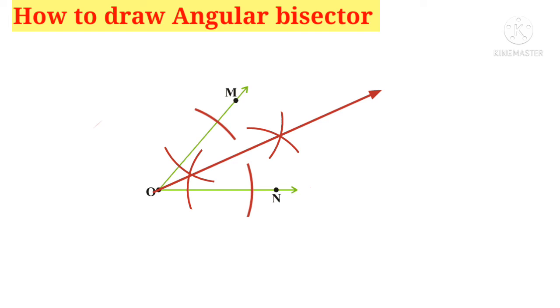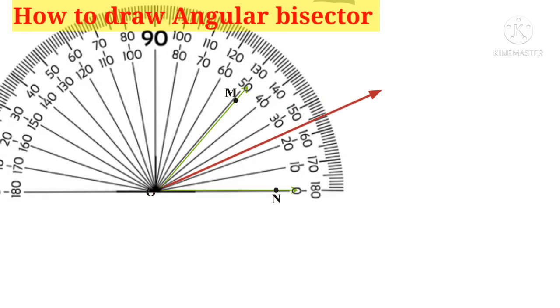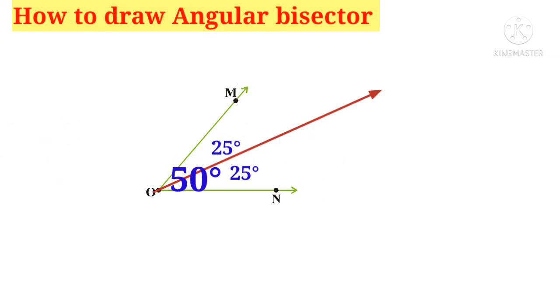Now let us take the protractor and measure the angle. The total angle MON is 50 degrees. Also observe that the red line is showing between 20 and 30, that is 25 degrees. So the red line is dividing the total angle 50 degrees into two equal angles, 25 degrees and 25 degrees. So the red line is the angular bisector.